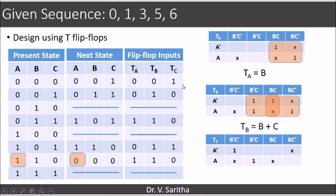Then TC. TC is 1 in the case of 0 and 5. So 0 and 5 will become 1. 2, 4, 7 are don't cares. And TC expression is A XNOR C.